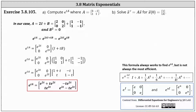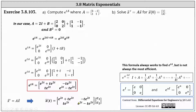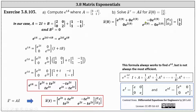For part B, we want to solve x prime equals Ax for x of zero equals the vector one, two. The general solution of x prime equals Ax is x of t equals the matrix exponential times the constant vector C one, C two. We use initial condition x of zero equals the vector one, two: substituting zero for t and setting equal to the vector one, two gives C one equals one and C two equals two. Notice the constant vector C is the same as the vector given for x of zero.